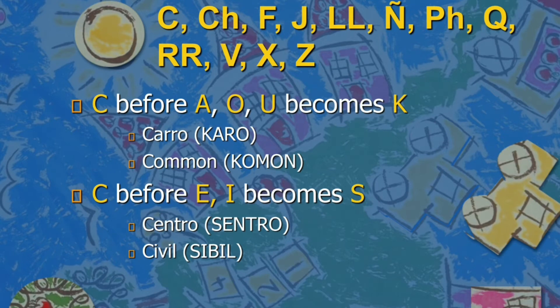Now, here is the guide on how to use C, CH, F, J, LL, NY, PH, Q, RR, V, X, and Z in the Cebuano language. Those letters should be converted to Cebuano based on our rules. C before A, O, and U becomes K — like Caro, it becomes Karo; and common becomes Kommon.